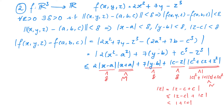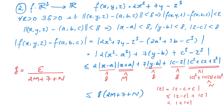Therefore |f(x,y,z) − f(a,b,c)| ≤ δ(2M + 7 + N). Thus, if we want this quantity to be less than ε, we choose δ = ε / (2M + 7 + N). Thus, given any ε, we can choose δ such that whenever ‖(x,y,z) − (a,b,c)‖ < δ, we have |f(x,y,z) − f(a,b,c)| < ε. That is, f is continuous.